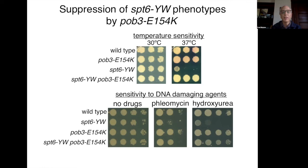Katie Weiner in the lab has identified a lot of phenotypes for SPT6 mutants suggesting defects in genome stability. SPT6-YW causes sensitivity to the DNA-damaging agents phleomycin and hydroxyurea, and again these phenotypes are strongly suppressed by the Pob3 mutation.